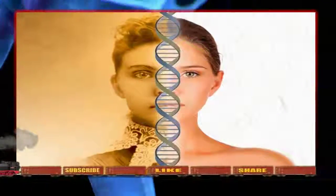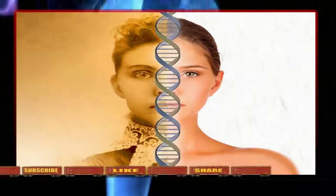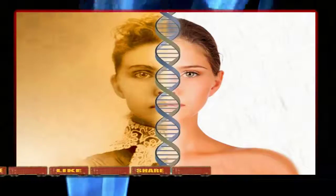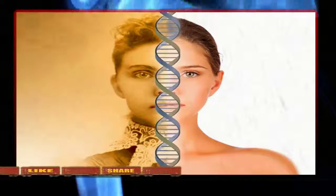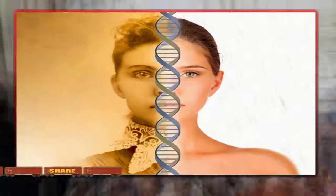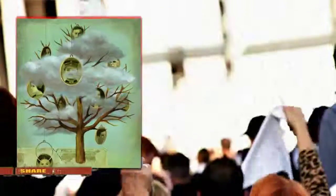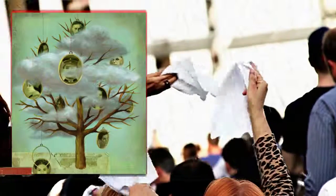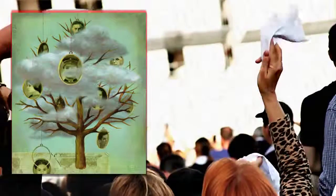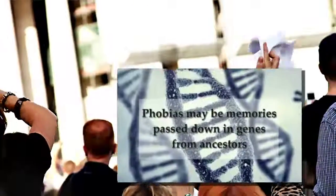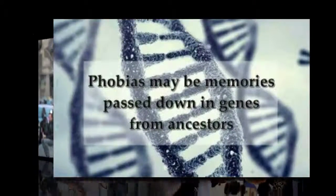The problem with measuring or proving this in mankind is the fact we live so much longer than a roundworm. Scientists say inherited effects in humans are difficult to measure due to the long generation times and difficulty with accurate record keeping. This research does however suggest that the events in our lives can indeed affect the development of our children and perhaps even grandchildren.